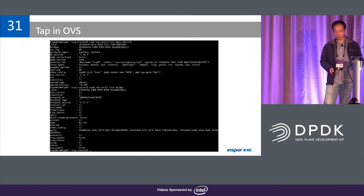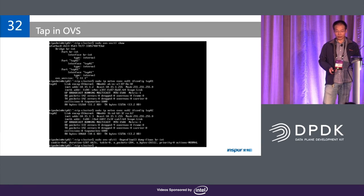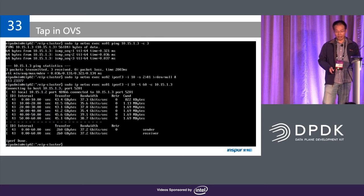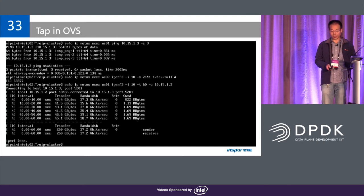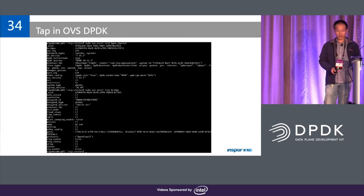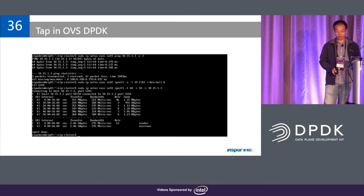Let's check performance. Here we use the OVS kernel datapath — we add two TAP interfaces and use iPerf to check performance. You can see if we use the OVS kernel datapath the performance is very good, total bandwidth is about 37.2 gigabits per second. But if we use OVS-DPDK, we use the same way to connect the TAP interfaces to OVS-DPDK, and if we run iPerf to check performance, you can see it's just 295 megabytes per second.